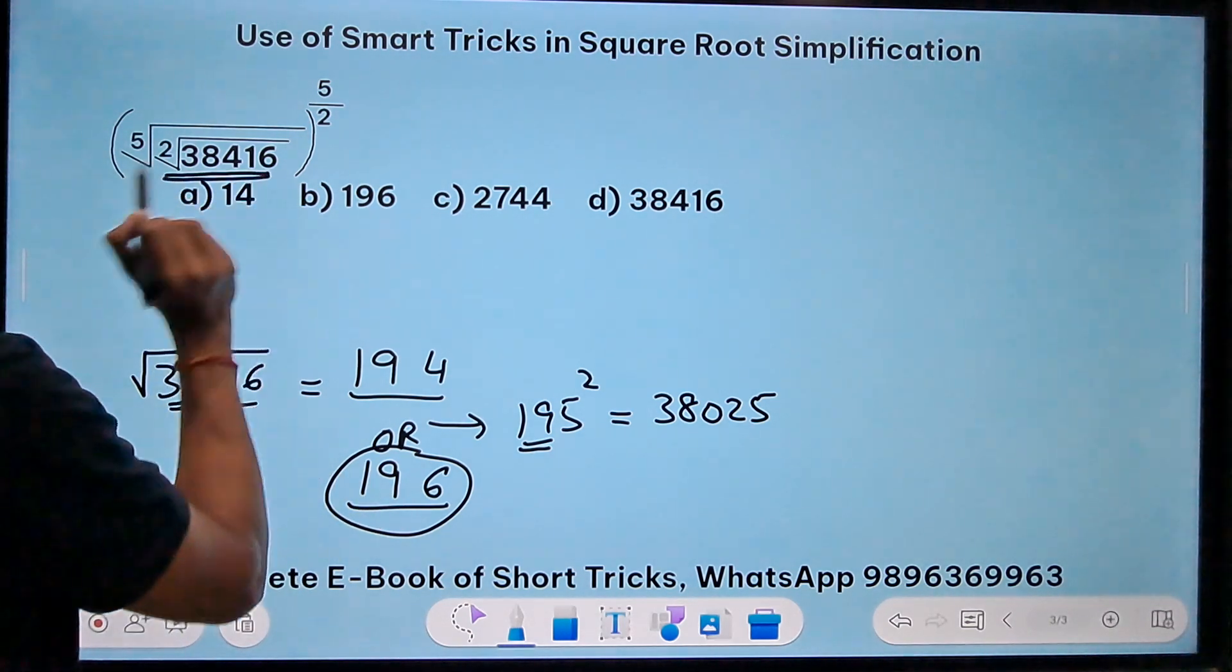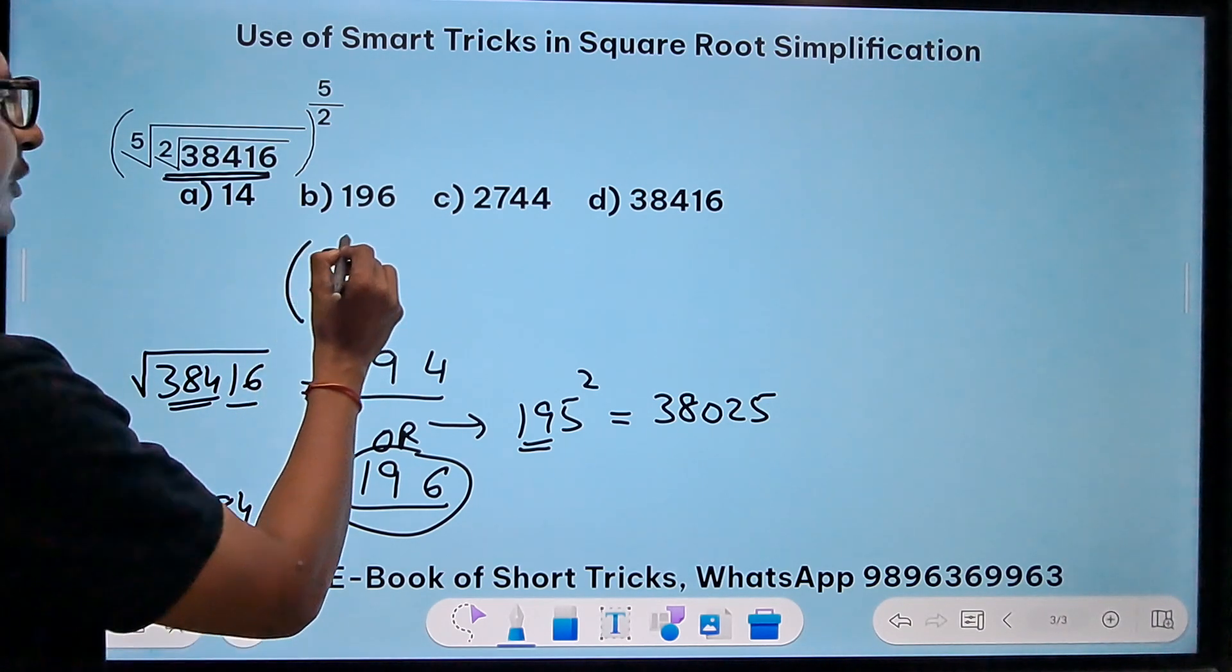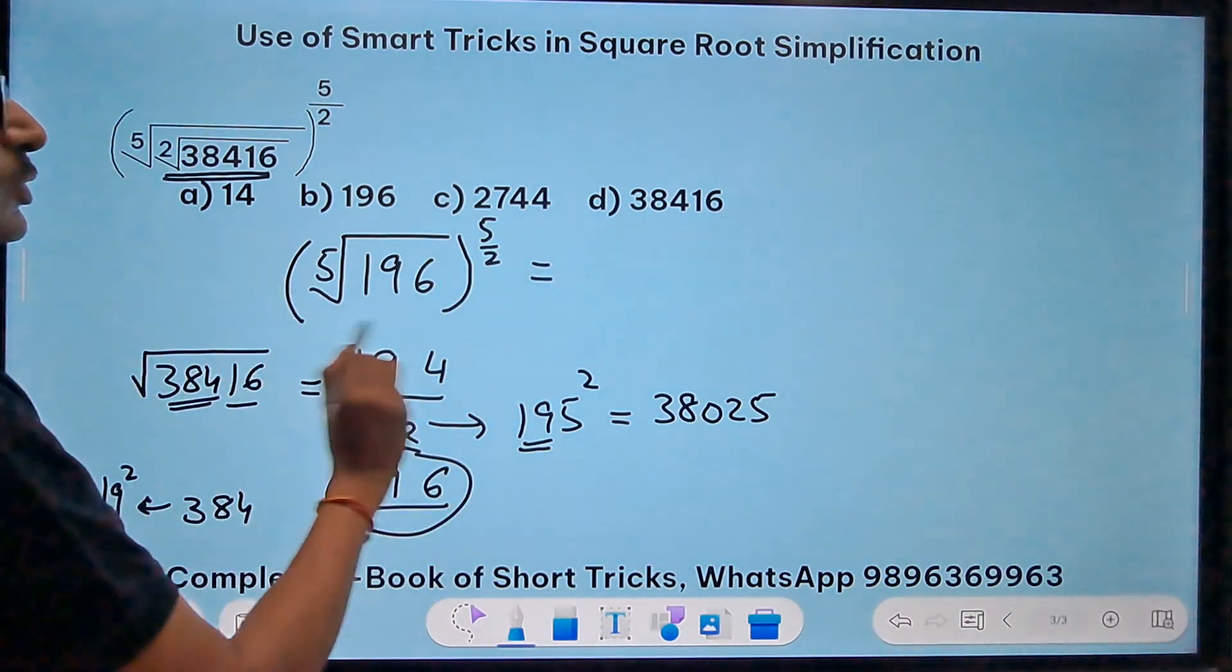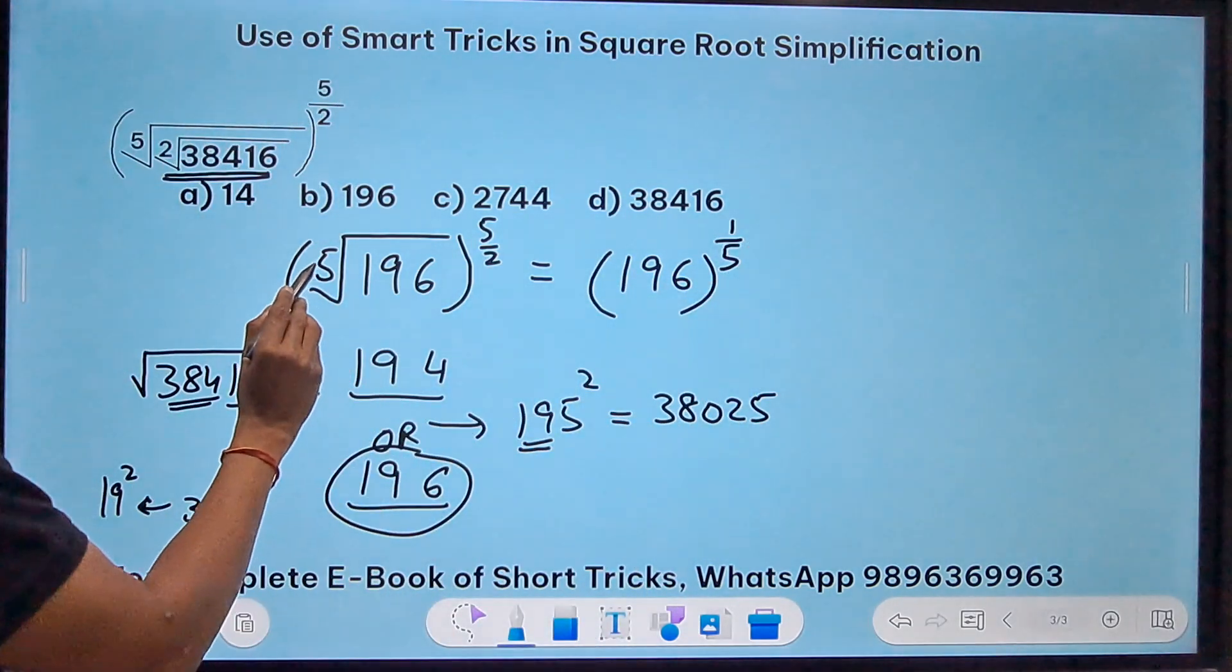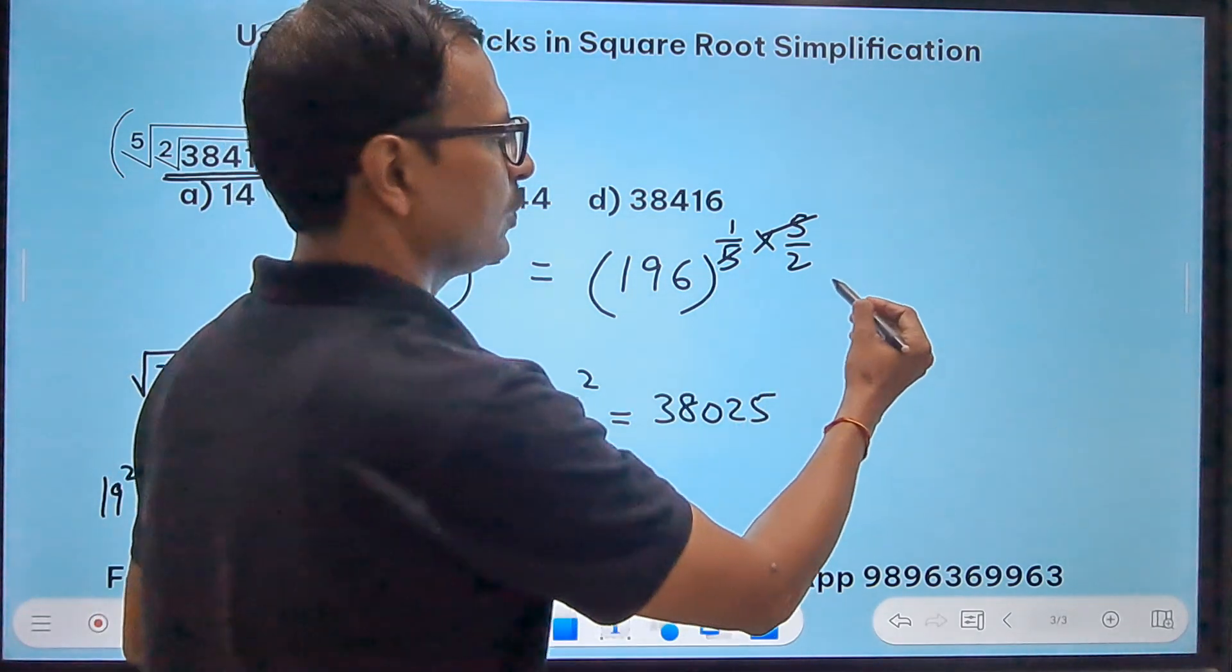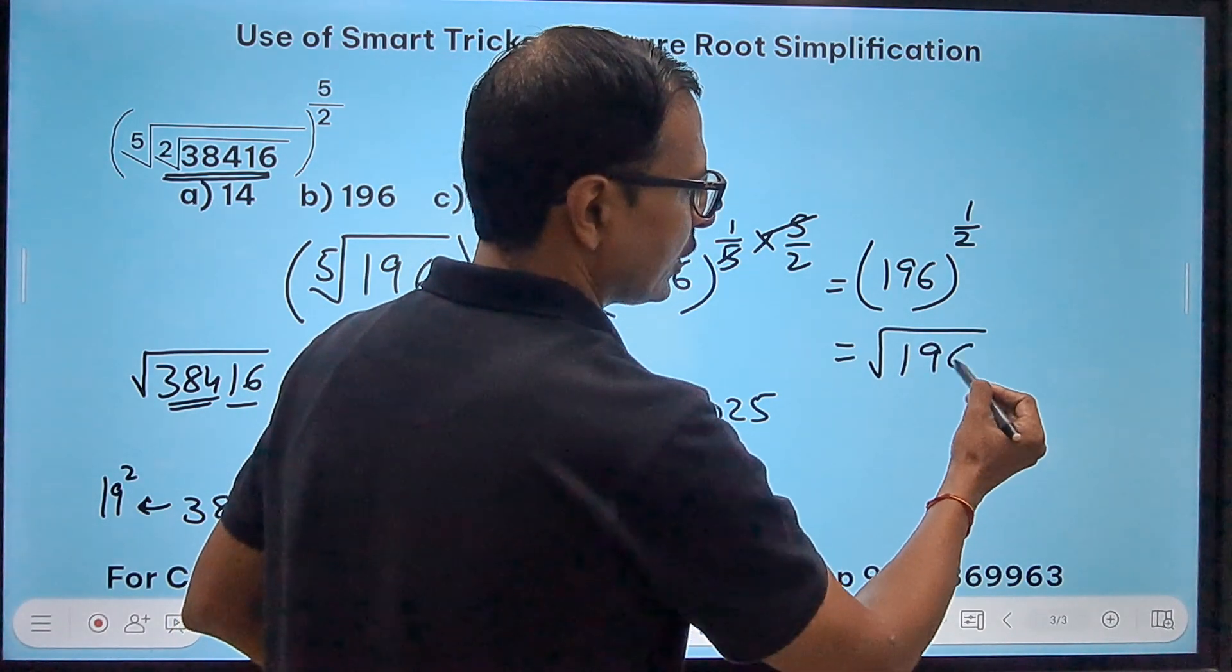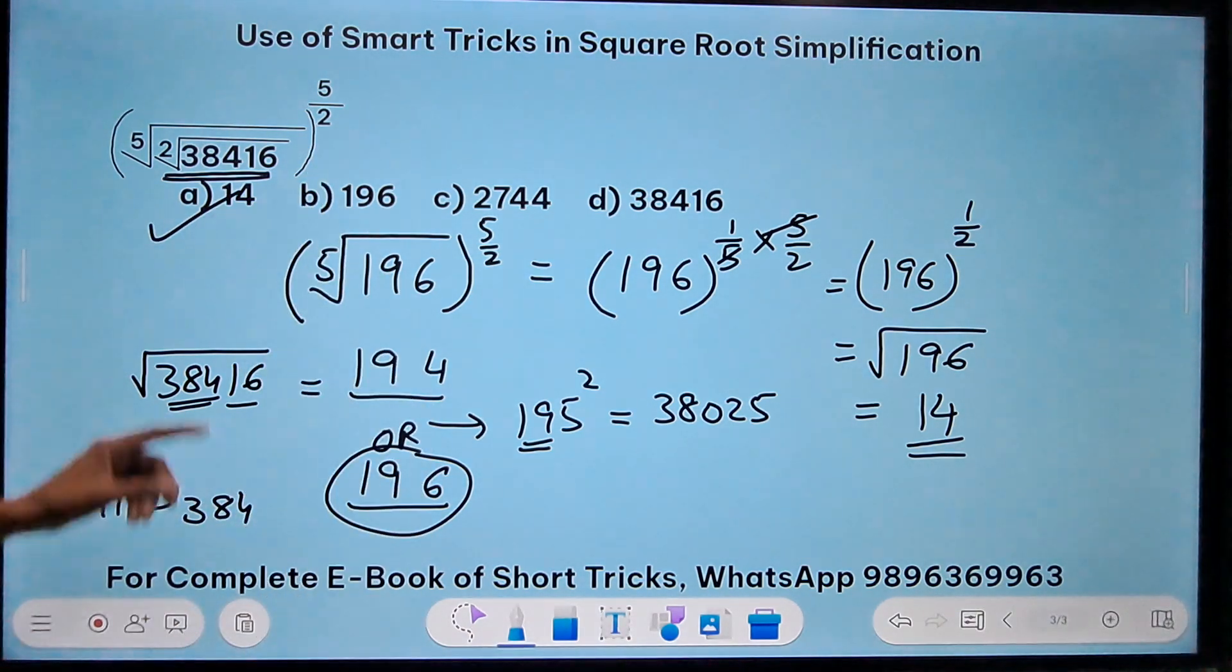Now the square root part, this part is 196. So what is the question? 5th root of the square root of 196 raised to power 5 by 2. Now what do you mean by 5th root? 5th root means the base raised to power 1 by 5. And there is another power 5 by 2, so 5 gets cancelled. So you have 196 raised to power half, and that is square root of 196, and we all know square root of 196 is 14. And there we go. The answer for the question is again A.